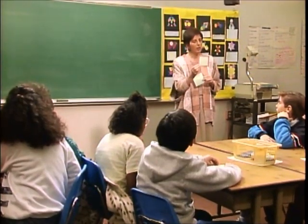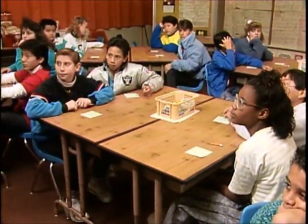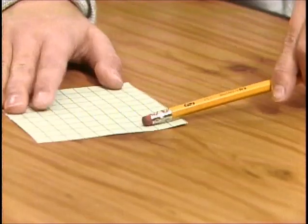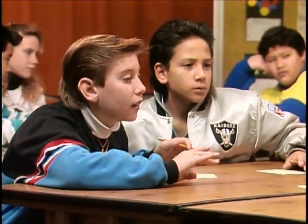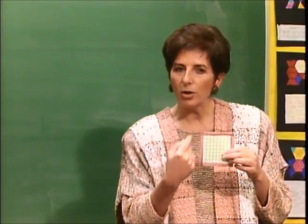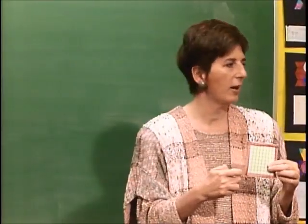The border problem is an activity for which there's more than one way to reach a solution. It integrates arithmetic, geometry, and algebra. Each student has a 10 by 10 grid, and they're asked to figure out with their groups how many squares are around the border. The teacher wants to hear from several students about how many squares are around the border and, more importantly, how they figured that out — seeing how many different ways they can find.